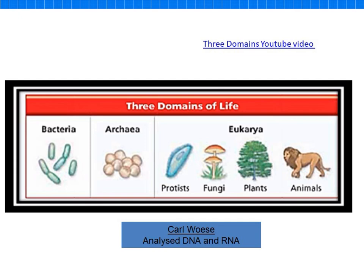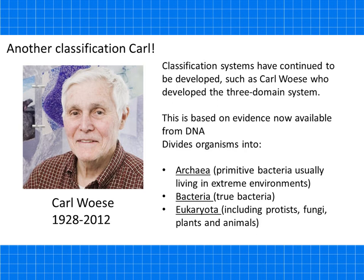This was further developed by Professor Carl Woese, who analysed DNA and RNA — a quite modern method of classification. He came up with the three domains of life: Bacteria, Archaea (a type of prokaryote), and Eukarya, which includes protists, fungi, plants, and animals. Archaea are primitive bacteria usually living in extreme environments. Bacteria are the true bacteria, and Eukaryota includes protists, fungi, plants, and animals.